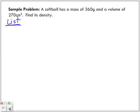So read it once. Read it a second time and try to pinpoint information that you're given. A softball has a mass of 360 grams. So just because I've circled it doesn't mean we don't list it. So M is equal to 360 grams.